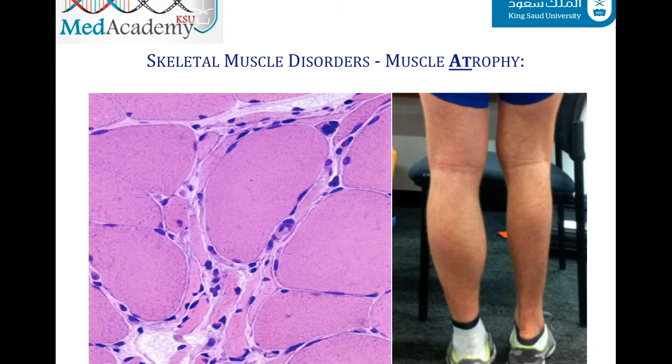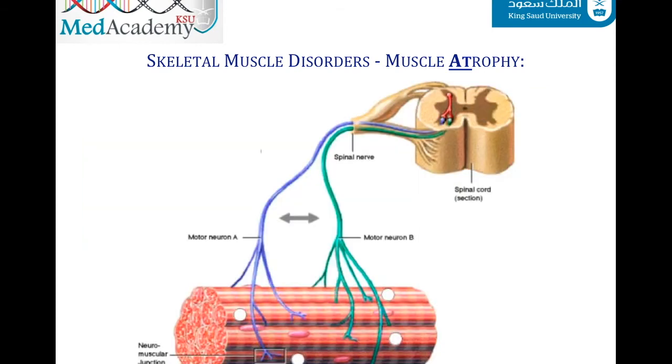Denervation can be due to acute causes such as trauma, or chronic causes such as motor neuron disease — a condition characterized by degeneration of motor neurons. Importantly, in atrophy the muscle fibers do not necrotize or die; they reduce significantly in size and lose their ability to function properly.